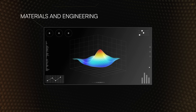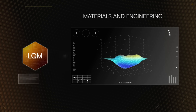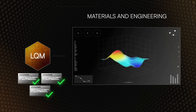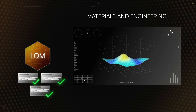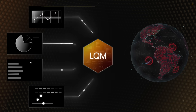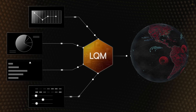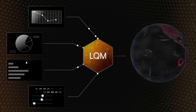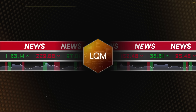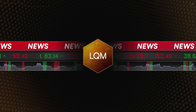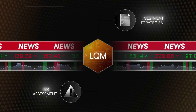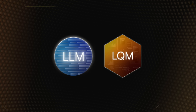A specific example is in the field of drug discovery — by analyzing molecular structures and predicting interactions, LQMs can significantly speed up the process of identifying new potential medications. In fields like material science or structural engineering, LQMs can help optimize designs by running countless simulations and suggesting improvements based on specific parameters. LQMs can also be used to process diverse data sources to create more accurate climate models, helping us better understand and predict environmental changes. And in the world of finance, LQMs can process market data, news, and economic indicators to provide more sophisticated risk assessments and investment strategies.